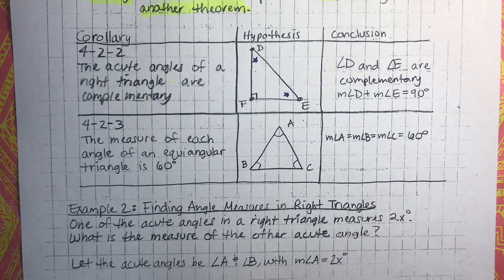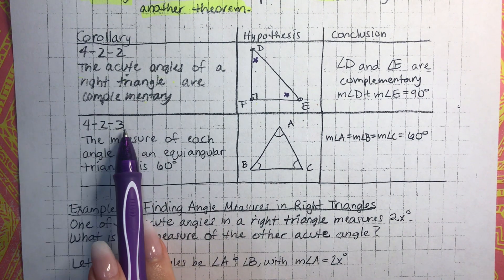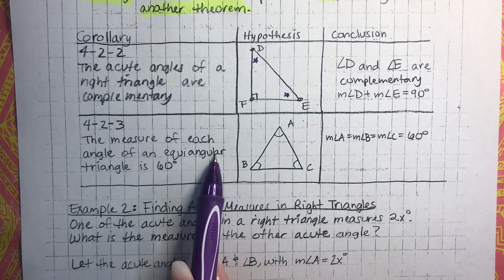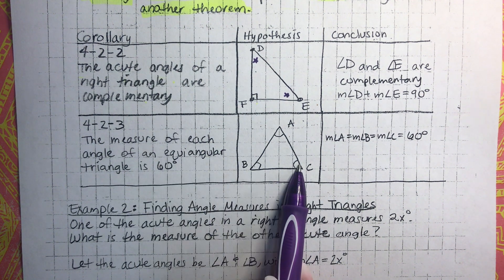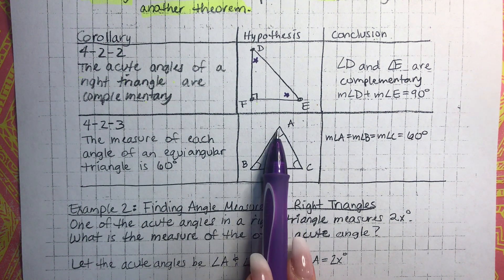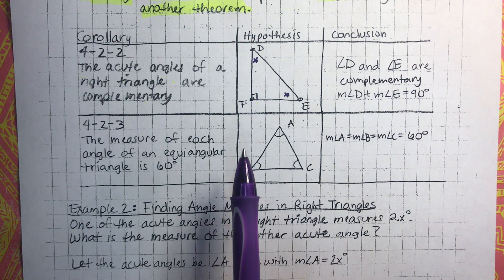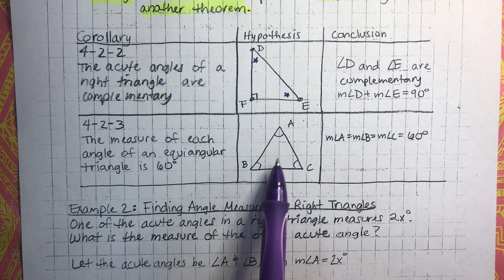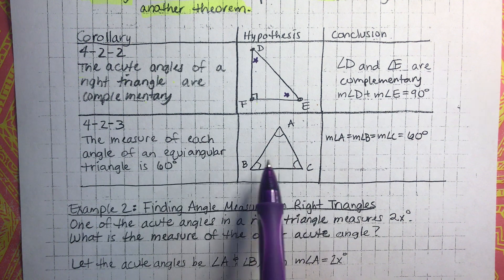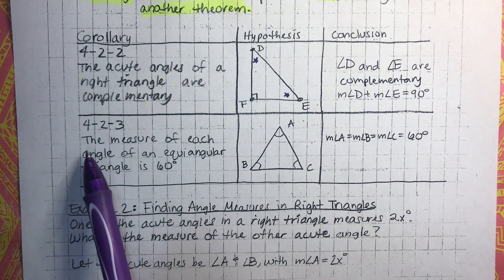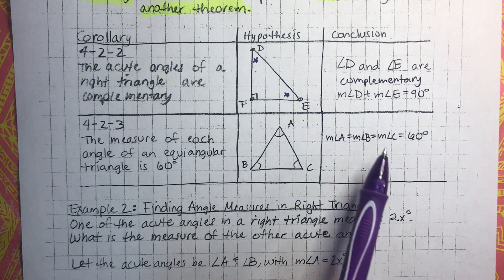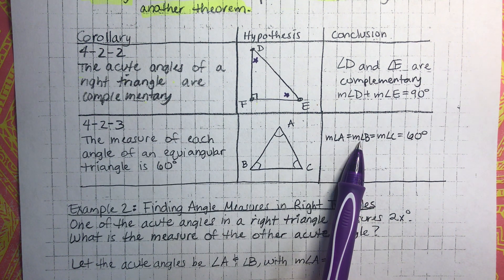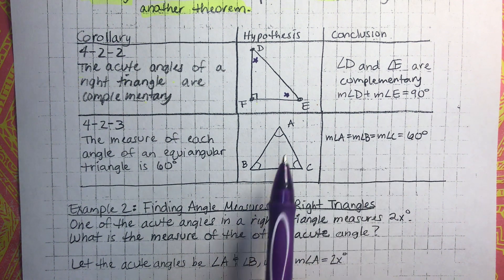The next corollary states that the measure of each angle of an equiangular triangle is 60 degrees. Equiangular means all of the angles are the same. Since all angles in a triangle add up to 180 — because of the triangle sum theorem — and they're all equal, it's basically 180 divided by 3, which is 60 degrees. So the measure of angle A equals angle B equals angle C equals 60.